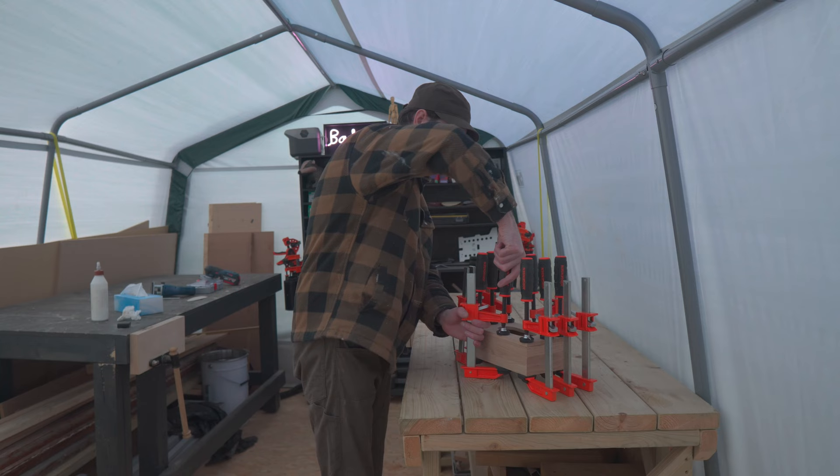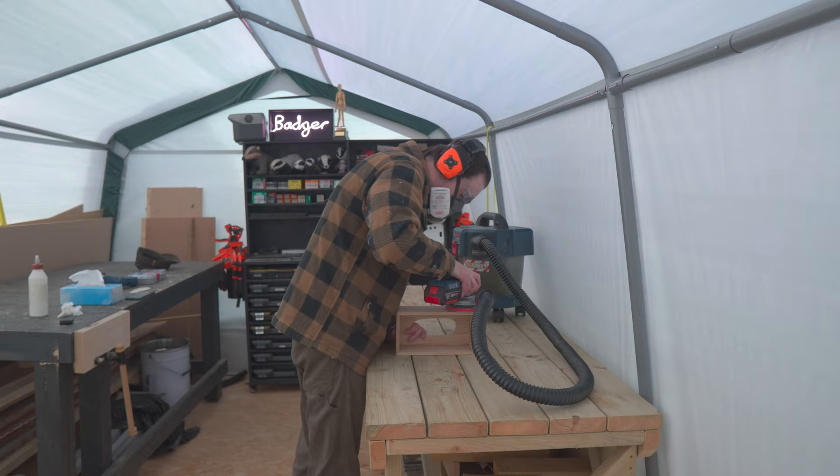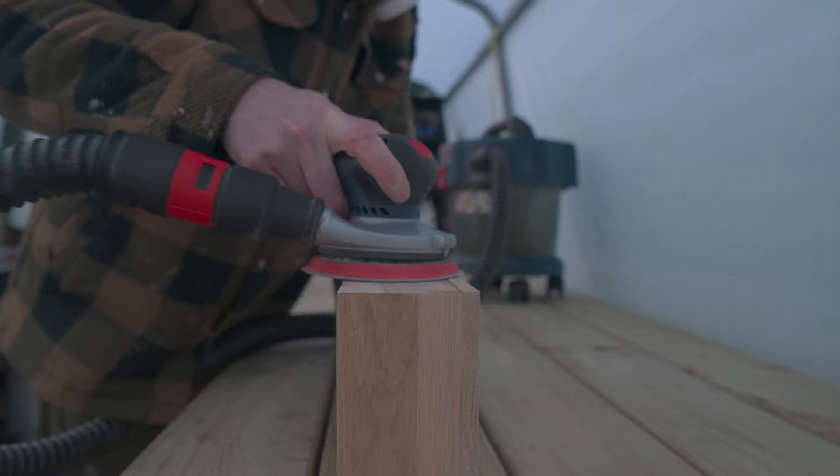When the glue's cured, I can get all those clamps taken off. Now, did I mention I made the lid oversized? Well, if I didn't, I had. So, I can grab the sander and sand down so the lid is flush with the body of the box.